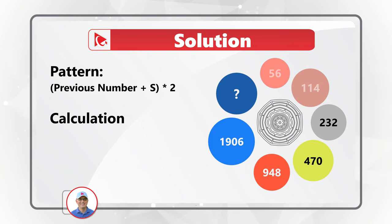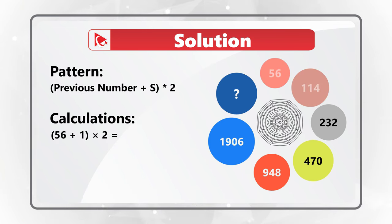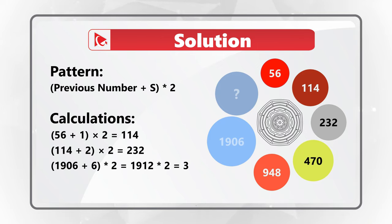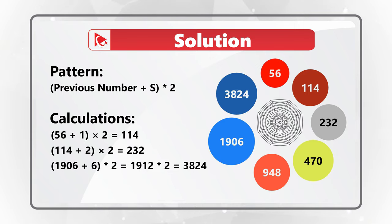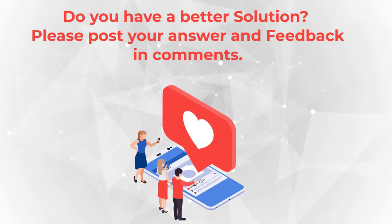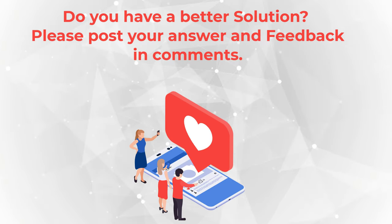The first number in the sequence is 56. Adding 1 (the sequence number) gives 57, and 57 multiplied by 2 equals 114. For 114, adding 2 gives 116, and 116 multiplied by 2 equals 232. So for our final number: 1906 plus 6 (the sequence number) equals 1912, and 1912 multiplied by 2 equals 3824. The correct answer is choice B, 3824. If you liked my solution, please like this video and subscribe.